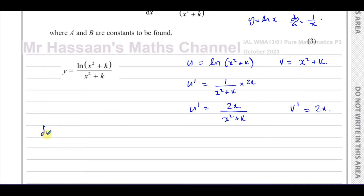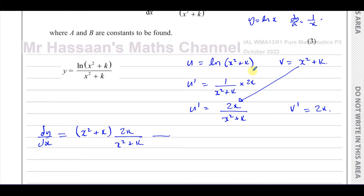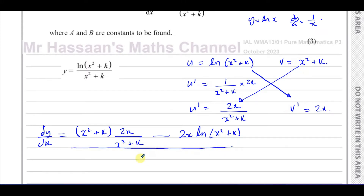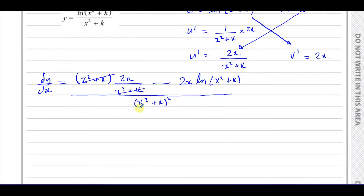When we use the quotient rule, dy/dx equals v times u' minus u times v', all over v squared. So that's (x² + k) multiplied by 2x/(x² + k), minus 2x times ln(x² + k), all divided by (x² + k) squared. This formula is in the formula sheet. Now the (x² + k) terms in the first part of the numerator cancel out.